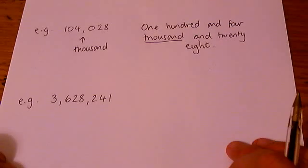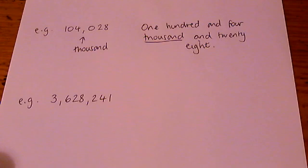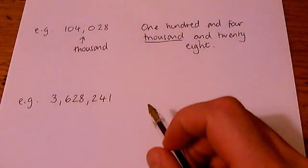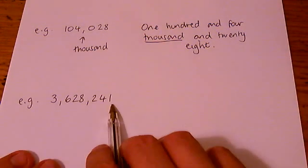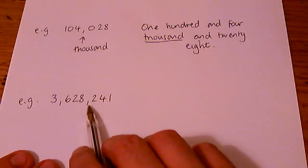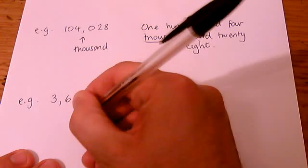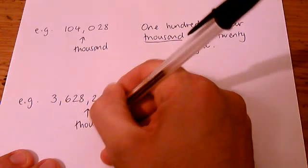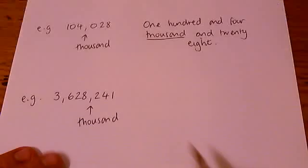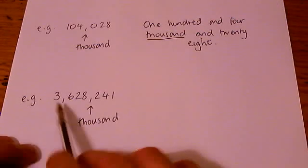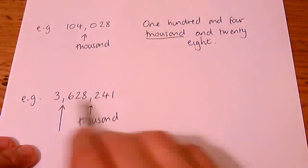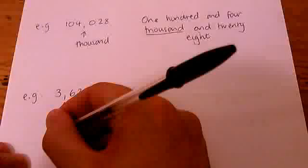The last one that I'm going to do like this is actually a lot bigger, this number. And if you work from the end of the number, we get to this first comma, which stands for the word thousand. But we also have got a second comma here. And this one, if you come to a second comma, will stand for the word million.